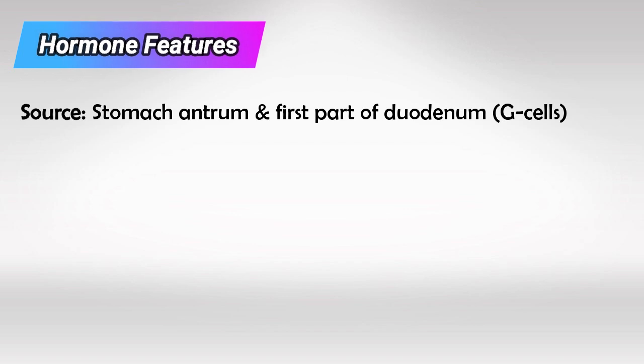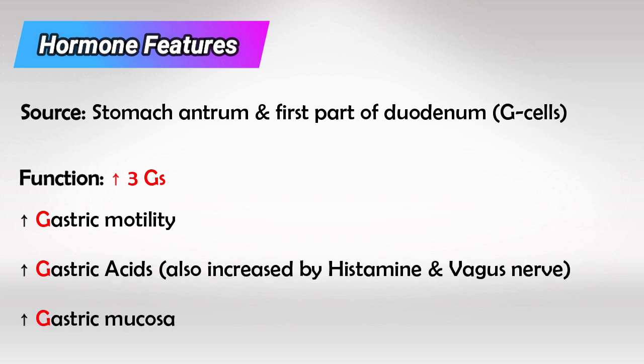Gastrin is released by G cells of the stomach, antrum, and the first part of the duodenum. To remember the function of gastrin, remember the three G's: G for increased gastric motility, G for increased gastric acids, and G for increased gastric mucosa.